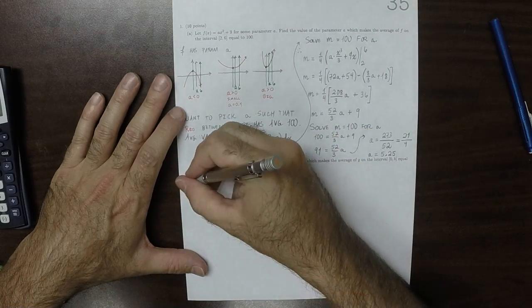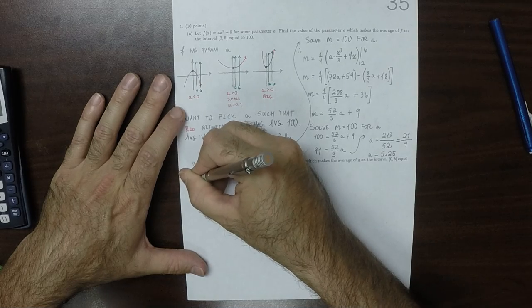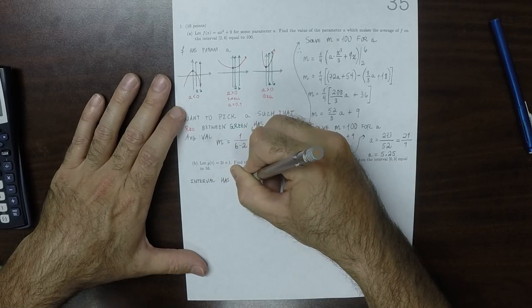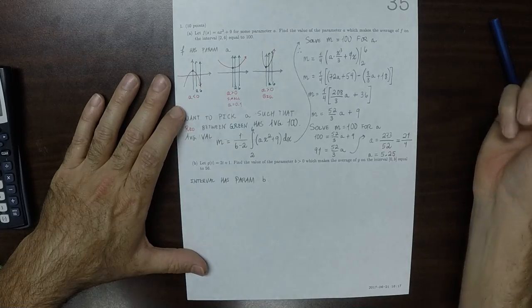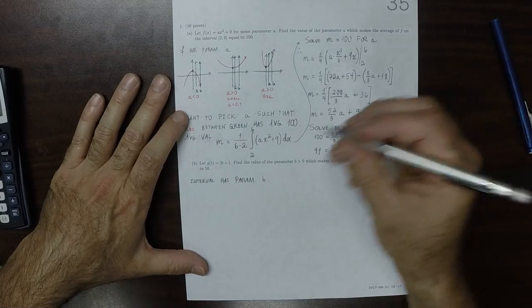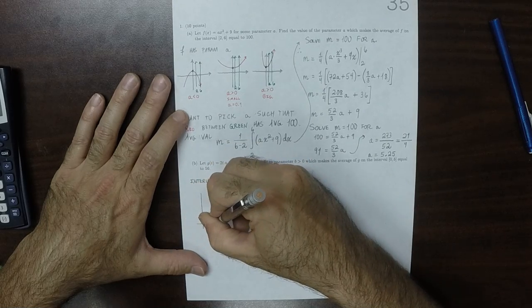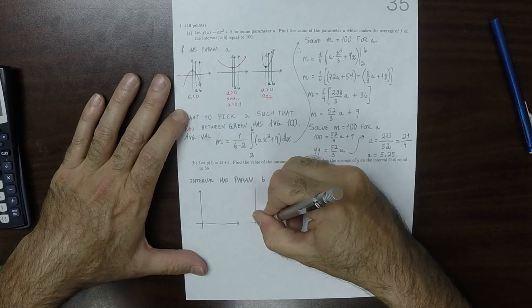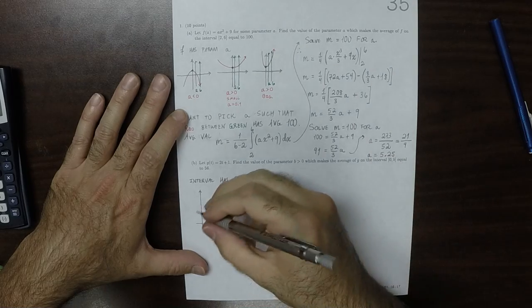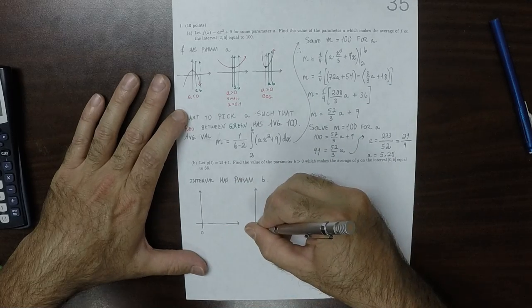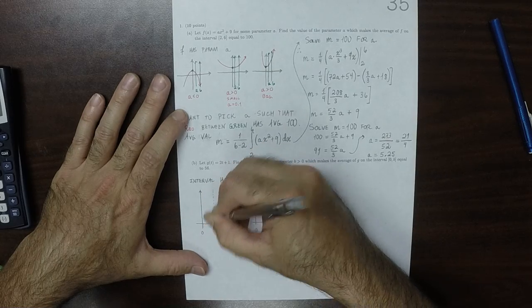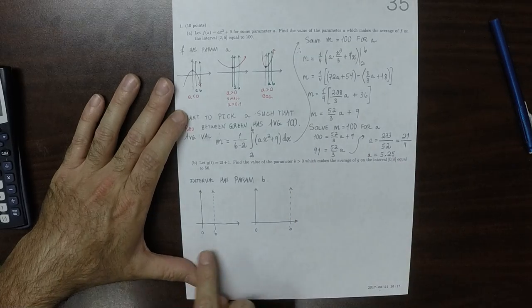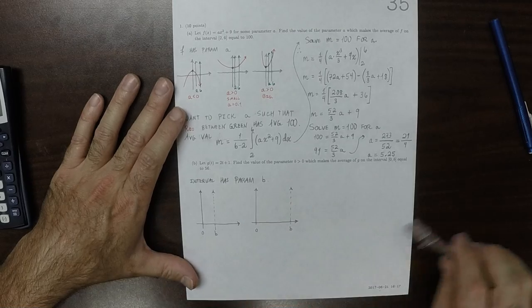Now, the interval in this question has a parameter B, which means that now the picture looks like this. Since the interval is 0 to B, they both have 0. This one will be a skinny one. This will be a wide one. Different possible values for B. B is what can be moved back and forth. G of t is 2t plus 1.